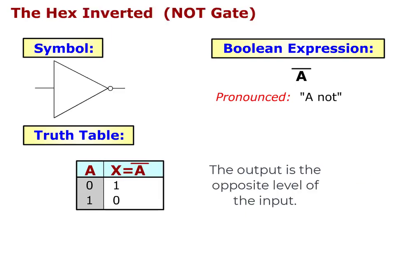This symbol, Boolean expression and truth table, reflects the hex-inverted, or NOT gate. In this truth table, the output is the opposite level of the input.